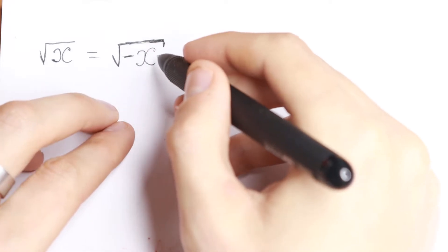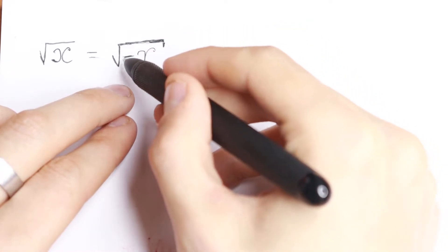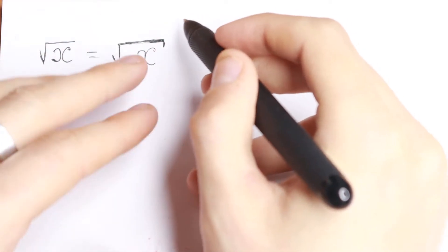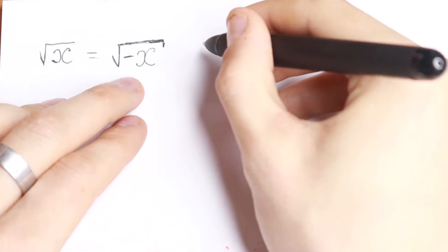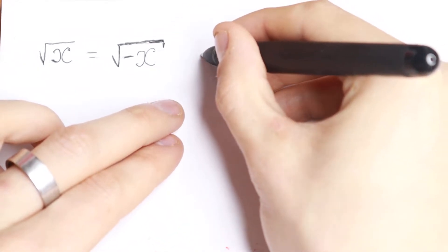So at first sight, this right side is not good, because for example, we could have minus one, which is not valid, since we know that the expression under the square root must be non-negative.